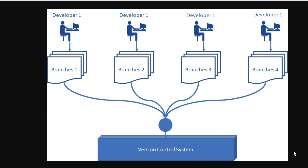That is the use of version control. For example, the first developer works in the first branch, and there is a second branch, third branch, and fourth branch. We will produce a final output project by merging these four branches through synchronization. We will tell you how to do this in real time in the upcoming videos.